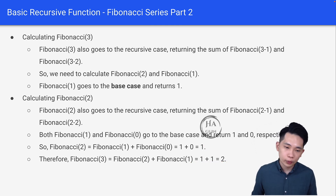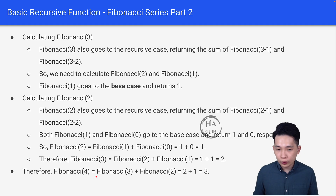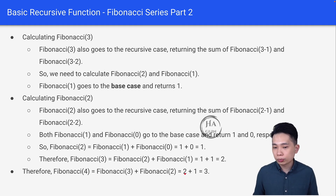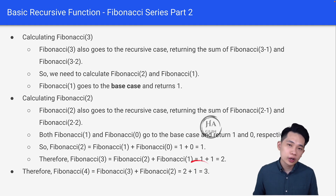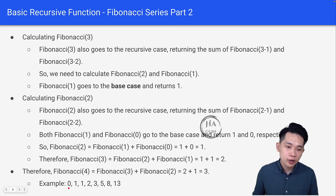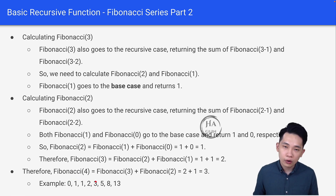Finally, Fibonacci(4) equals Fibonacci(3) plus Fibonacci(2), which is 2 plus 1, equal to 3. Therefore, the final answer is 3, which matches our sequence: 0, 1, 1, 2, 3. If you look at the index — 0, 1, 2, 3, 4 — F(4) is actually equal to 3.